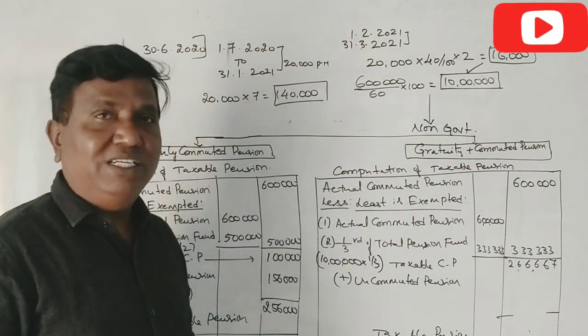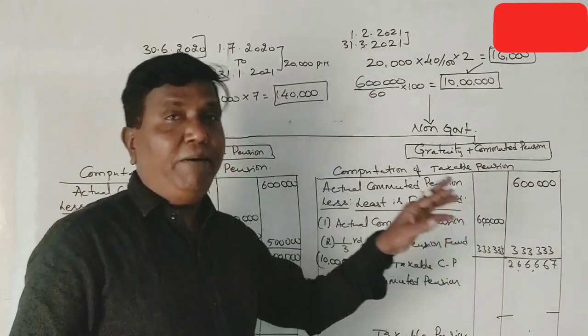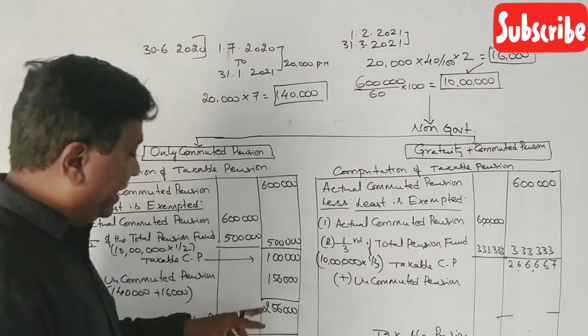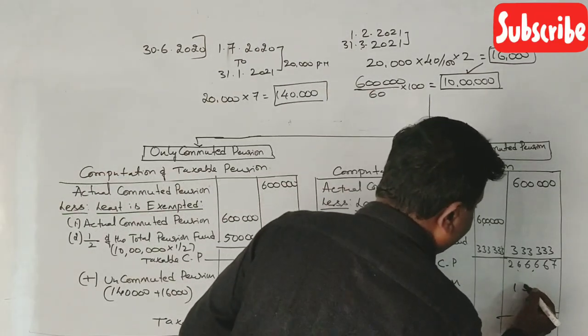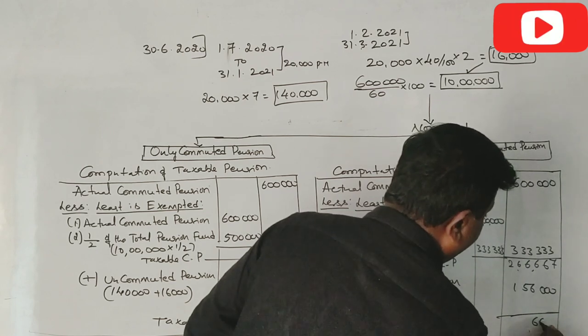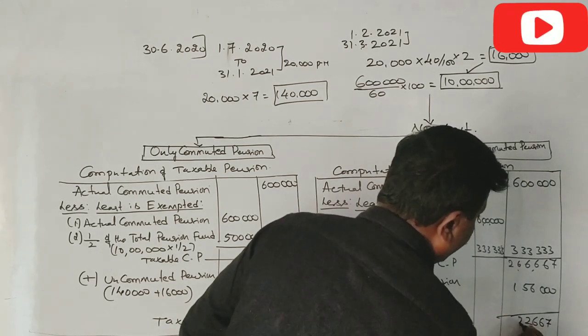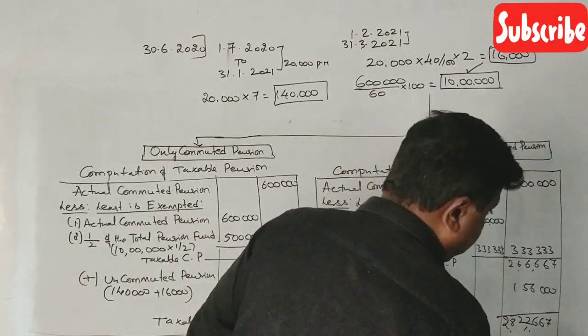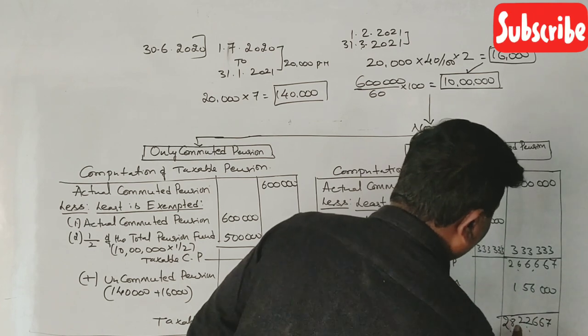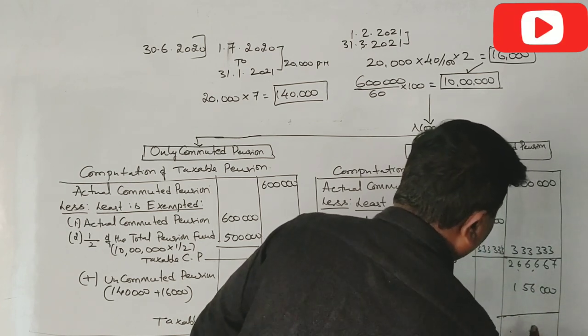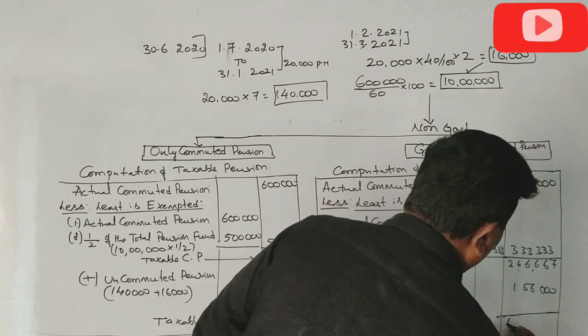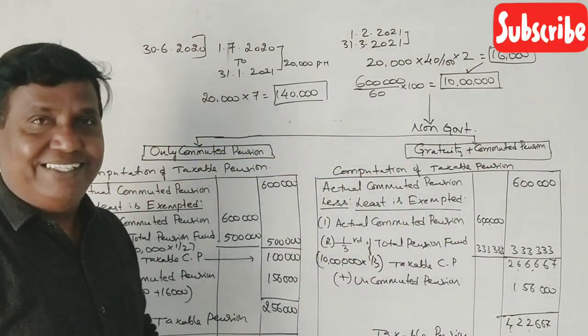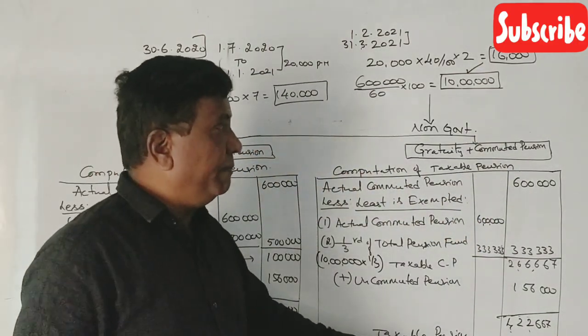And our pension is 2,66,667 rupees commuted pension taxable. Uncommuted pension is the same amount of 1,56,000. So total is 4,22,667 rupees. This is taxable pension.